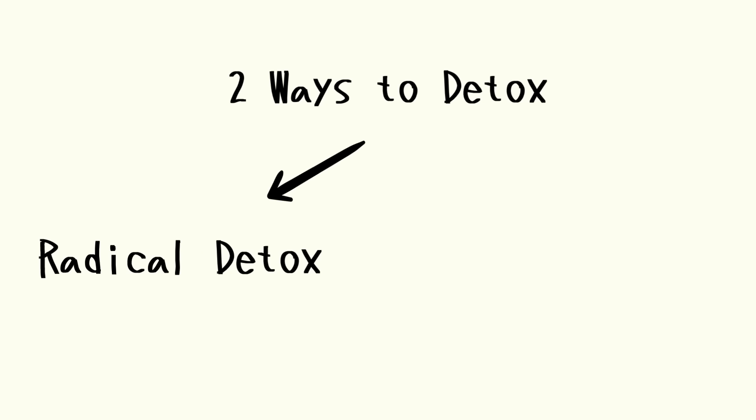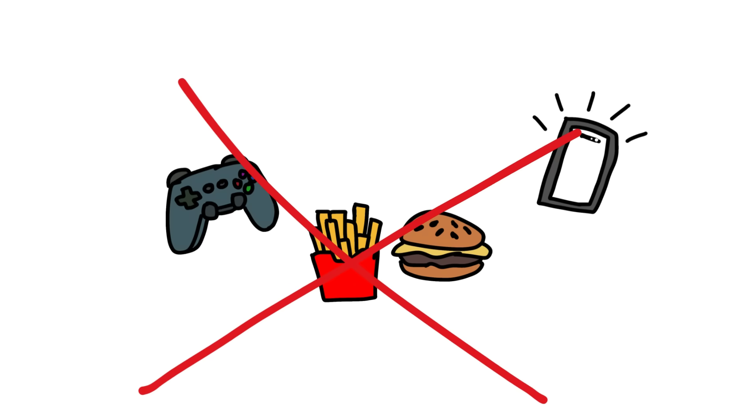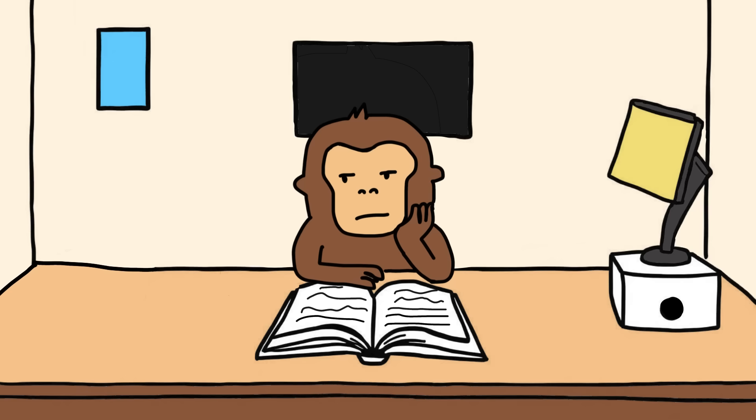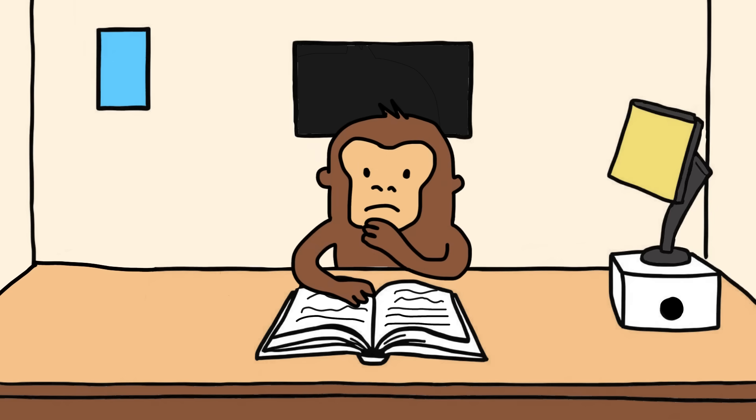Number one: Radical detox. One whole day. No phone. No internet. No games. No junk food. Monkey sits with boredom. And when boredom hits hard, suddenly writing in a journal or reading a book feels fun.